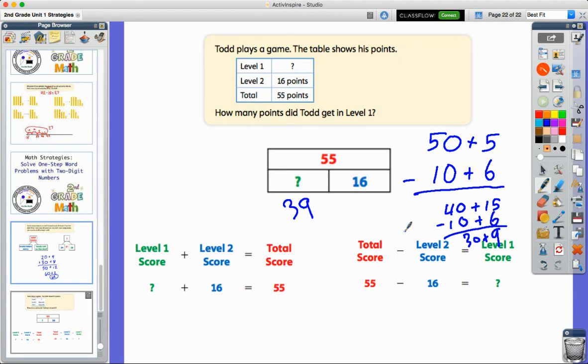So again, with working with word problems, the biggest part is trying to figure out which operation is going to happen. So they use those bar models or part, part, wholes to help us make sense of the problem. And then we're going to have to use our strategies that we've learned for addition and subtraction of two-digit numbers.